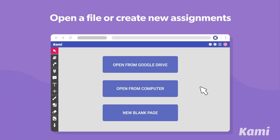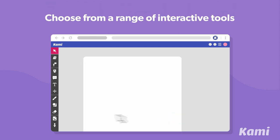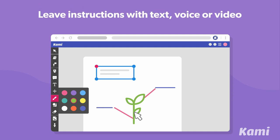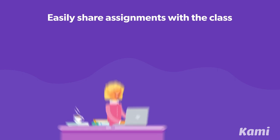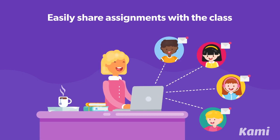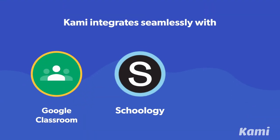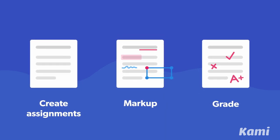To get started, open a file from Google Drive, upload one from your computer, or create a blank page. Create assignments and lessons for any subject using a variety of interactive tools. Leave instructions or video lessons to guide students through their work. Send assignments out to your students by sharing a link or through learning management systems. CAMI works seamlessly with Google Classroom, Schoology, and Canvas, where you can create assignments, markup, and grade using CAMI tools.